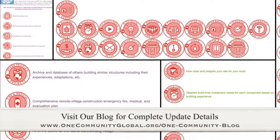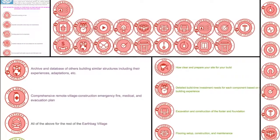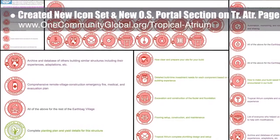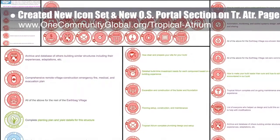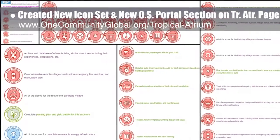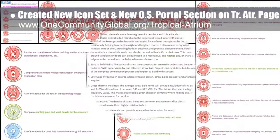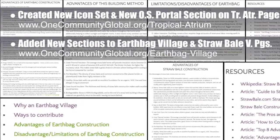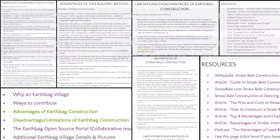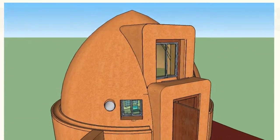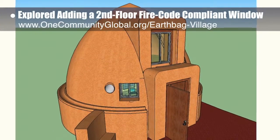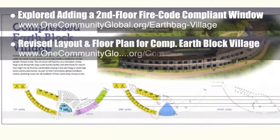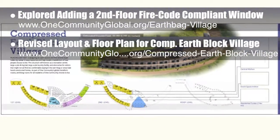This week, the core team — which includes pioneer members plus those helping who don't wish to be individually acknowledged — created a new icon set and new open source portal section on the Tropical Atrium open source hub. We also added new resource and advantages and disadvantages sections to the EarthBag Village and StrawBale Village open source hubs, and explored adding a second-floor fire code compliant window to the domes. Additionally, the core team revised the layout and floor plan for the Compressed EarthBlock Village pod 4.